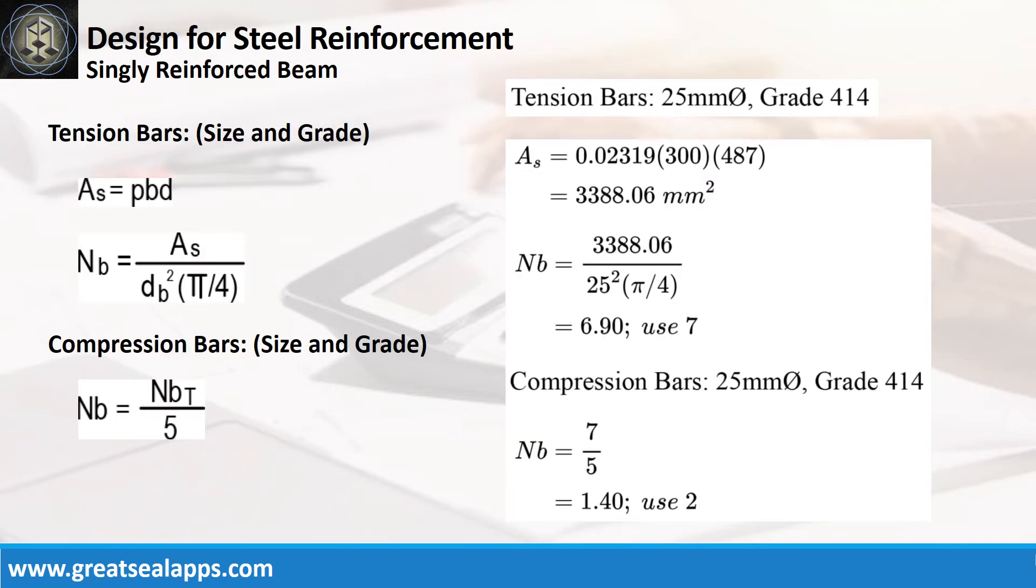Given rho equals 0.02319, B equals 300 mm, and D equals 487 mm, the area of steel for tension bars is 3,388.06 square millimeters, and the number of bars for 25 mm bar is 7. The number of compression bars is 2.